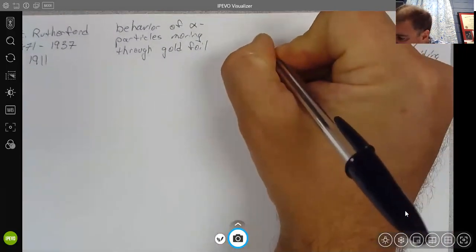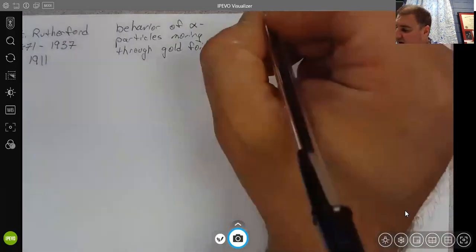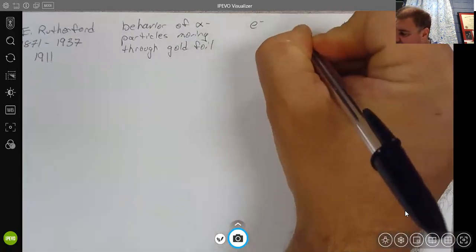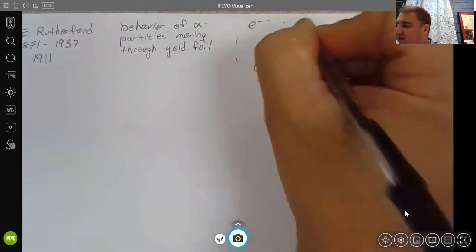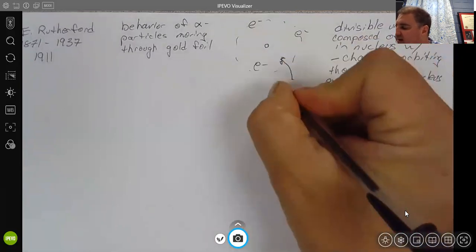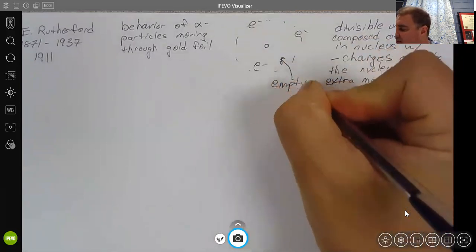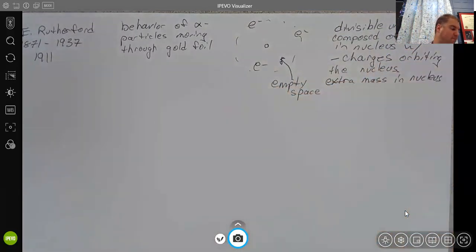Rutherford's model then is of a nucleus which is extremely small compared to the rest of the atom, that these electrons are moving around the nucleus and that most of the atom is empty space.